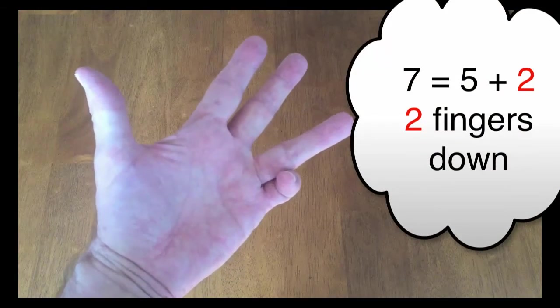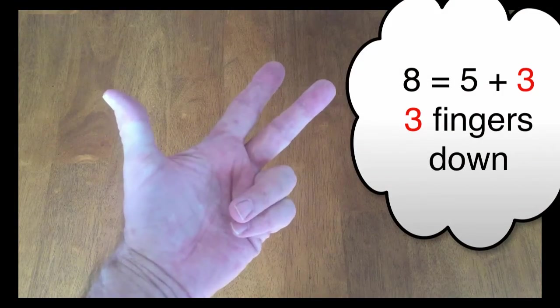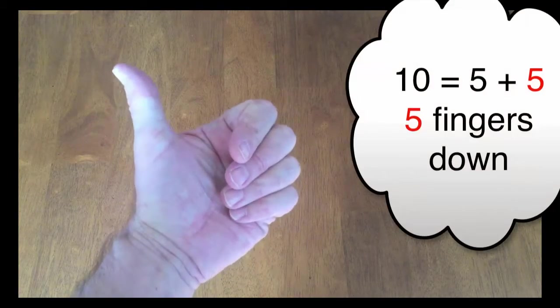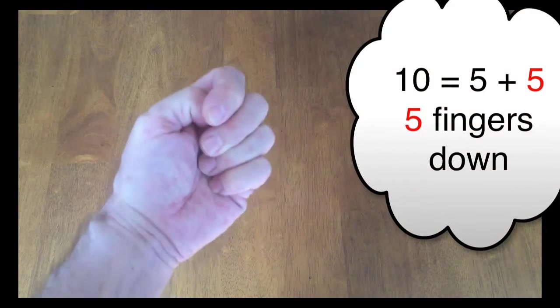For 7, that's 2 greater than 5, you'd put down 2 fingers. 8 being 3 greater than 5, you'd put down 3 fingers. 9 since it's 4 greater than 5, 4 fingers. And 10 being 5 greater than 5, you'd put down 5 fingers.